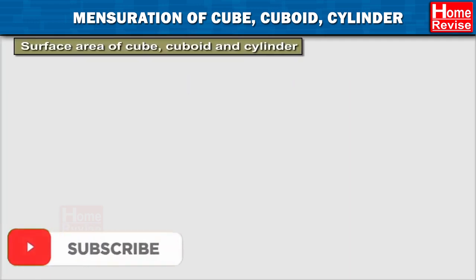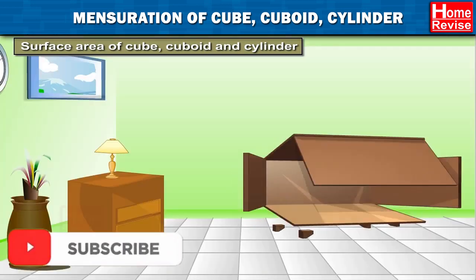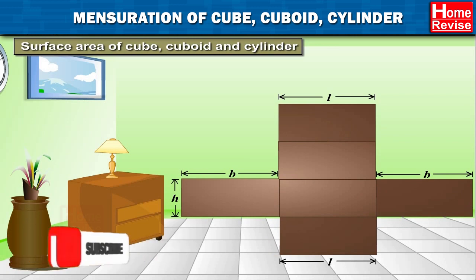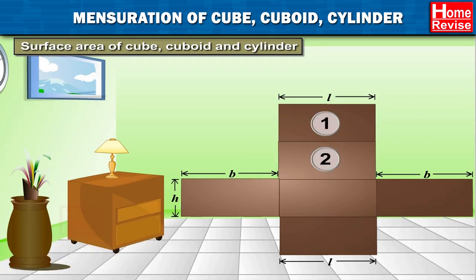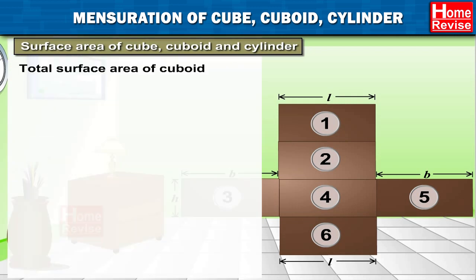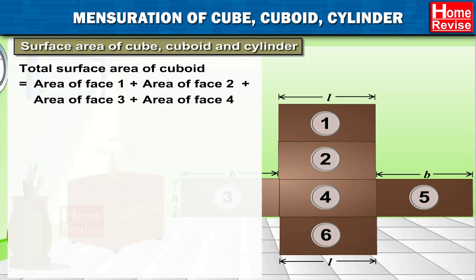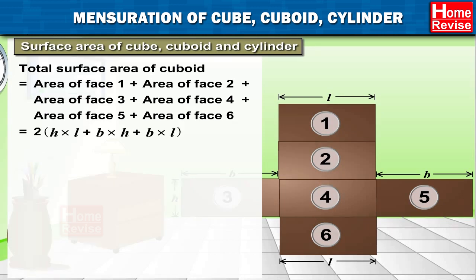Surface Area of Cube, Cuboid, and Cylinder. If we could open a cuboidal box and lay it flat, we can see it has six faces. Therefore, total surface area of cuboid is equal to the sum of areas of all six faces: S1 + S2 + S3 + S4 + S5 + S6, which equals 2 times (H×L + B×H + B×L).